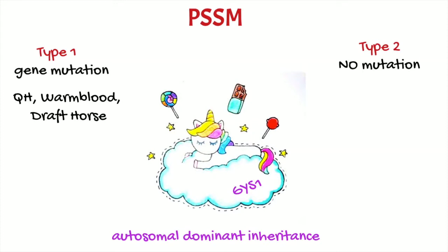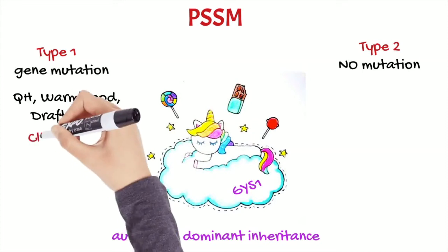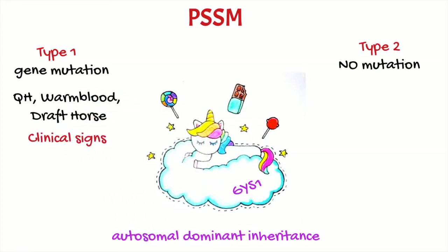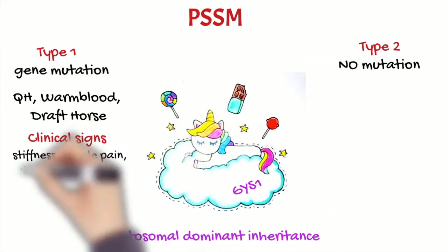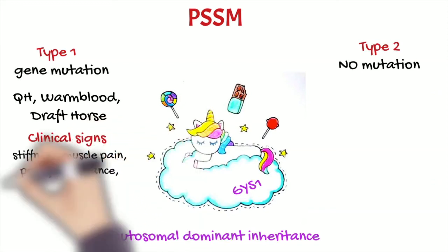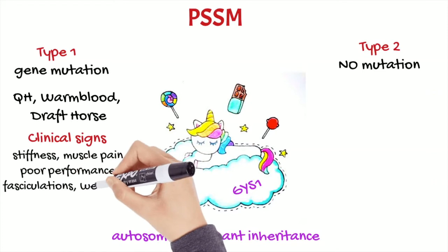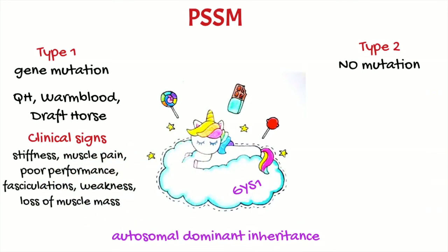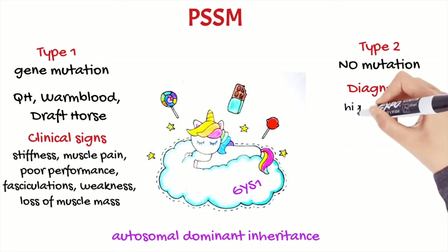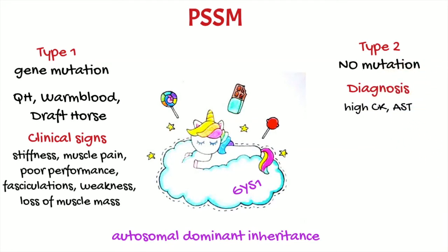Some horses may be asymptomatic, while others may present recurrent episodes of stiffness and muscle pain associated with exercise. Signs most common in warmblood and draft horses are poor performance, chronic muscle pain, fasciculations, weakness, and loss of muscle mass. During an acute episode, muscular enzymes may be high, but they are usually normal at rest.